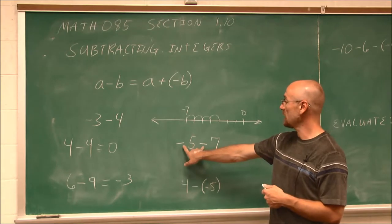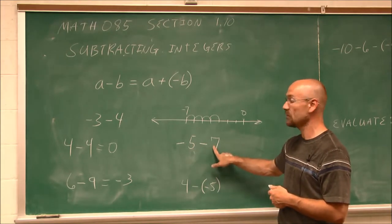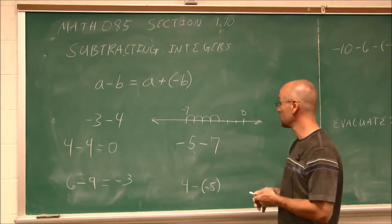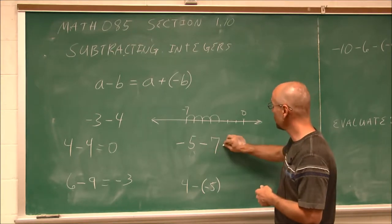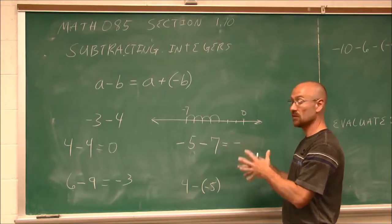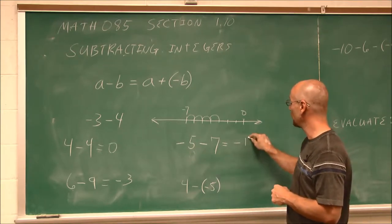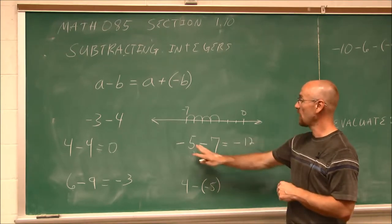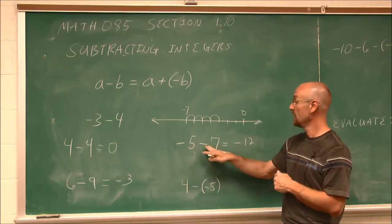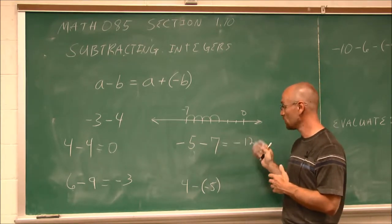Here we have the same sign — starting at negative 5 and going to the left 7. We're starting negative and going more negative. Same sign combined, keep that sign. 5 and 7 is 12. So negative 5 minus 7 gives us negative 12.